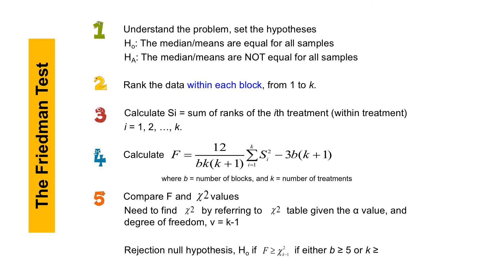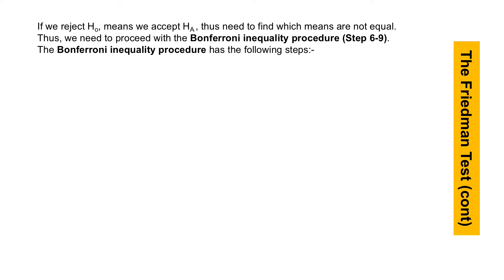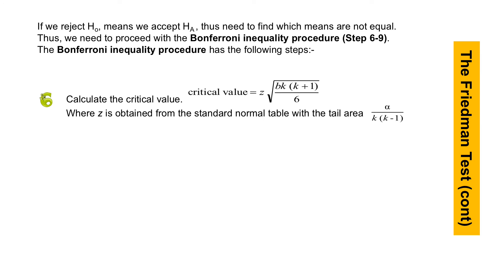The reason why this test is divided into two parts is because we just have to end at the fifth step if we accept the null hypothesis. But if we reject the null hypothesis, which means there is a difference in the samples we analyze, then we have to proceed with the second part in order to find which pairs or samples that are not equal. The second part of the Friedman test is also known as Bonferroni inequality procedure. The procedure has four steps, starting with the sixth step — to calculate the critical value given by this formula.